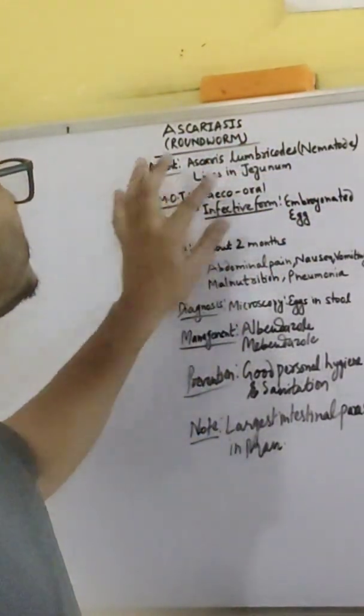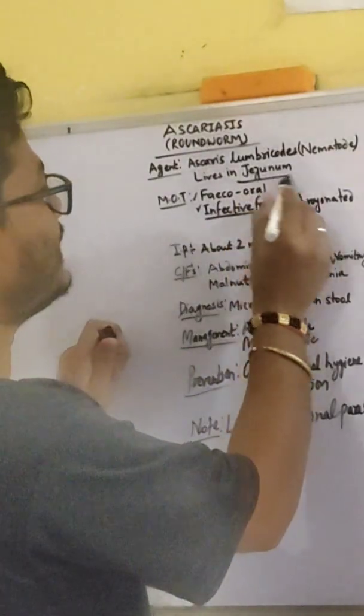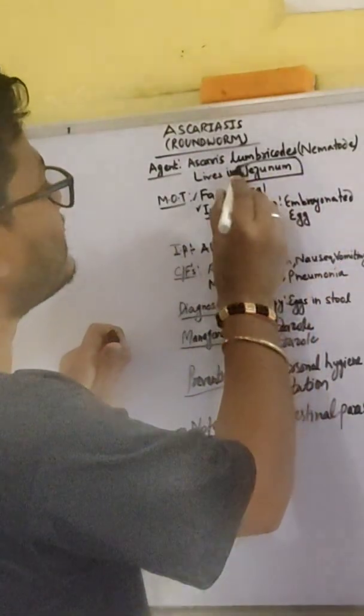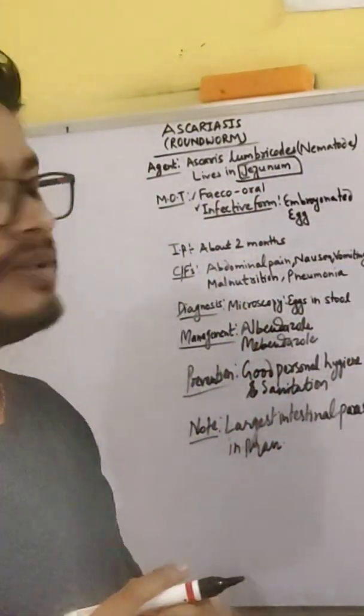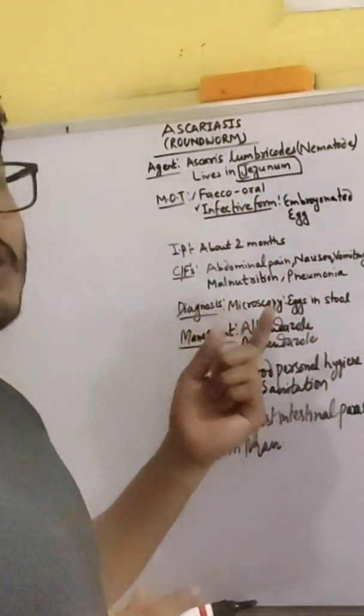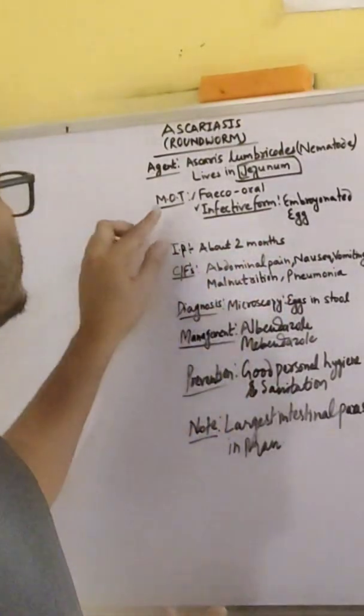It lives in the Jejunum. Ascariasis as well as hookworm both live in the Jejunum — this must be noted.